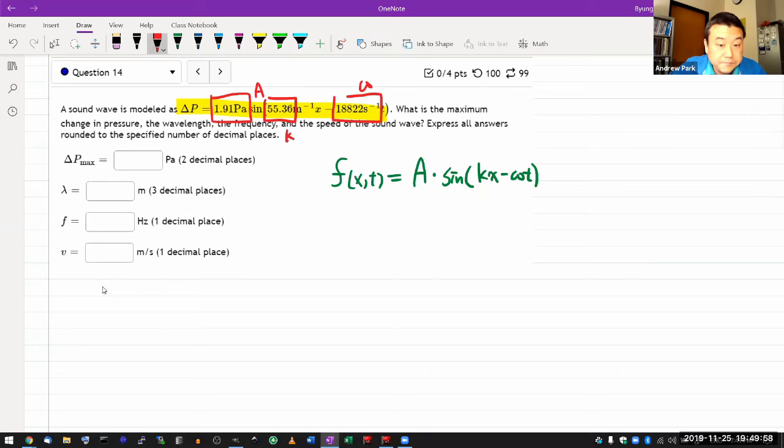So just plug that in here. This amplitude A should be the maximum change in the pressure. That's usually what people mean. It could also be double the amplitude, but I don't think it means that.